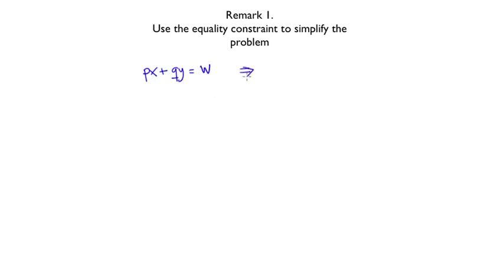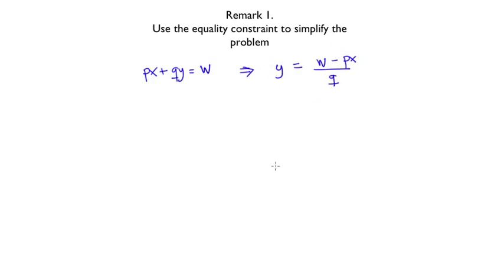This implies that at any solution, y has to be equal to W minus Px divided by Q. Why is that useful? Because if you know x, you know y and vice versa. So even though in principle this looks like a two-variable maximization problem, given the equality constraint it's just a one-variable maximization problem.